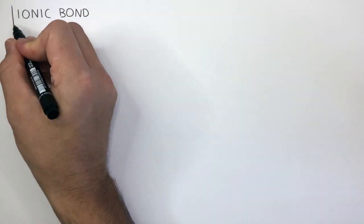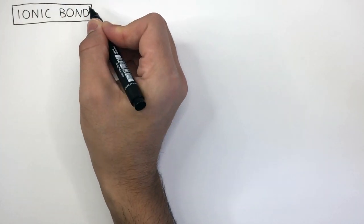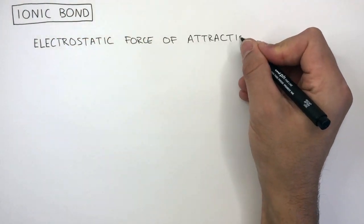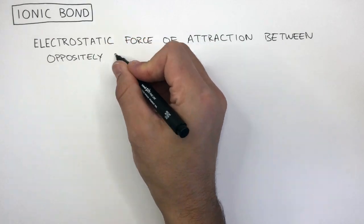In this video, we're going to learn what an ionic bond is. An ionic bond is the electrostatic force of attraction between oppositely charged ions.